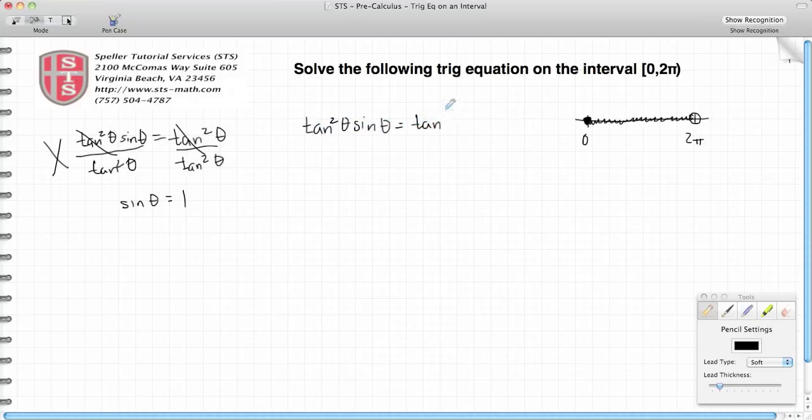Tangent squared theta sine theta is equal to tangent squared theta. Better approach is to subtract tangent squared theta from both sides, so I am left with tangent squared theta sine theta minus tangent squared theta is equal to 0. I just moved this tangent squared theta to the left-hand side. Now I see in both of my terms they share a tangent squared theta, so let's factor out a tangent squared theta. When I factor out a tangent squared theta, that leaves me with a sine theta here, and when I factor out a tangent squared theta from here, this becomes 1.